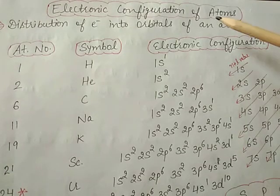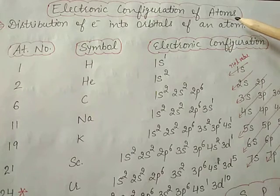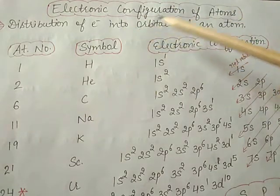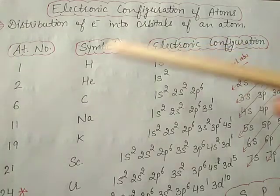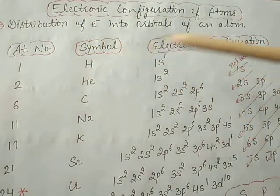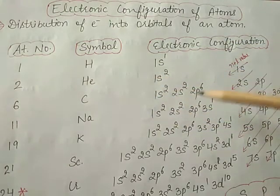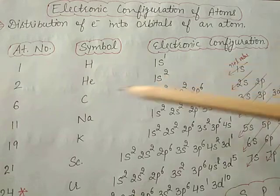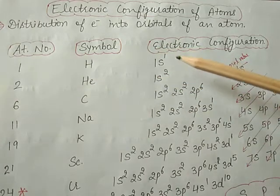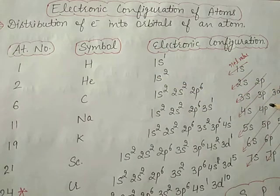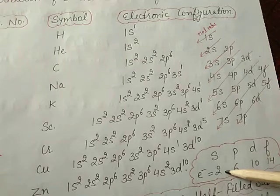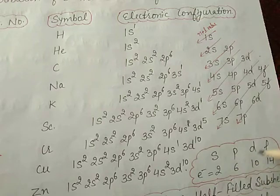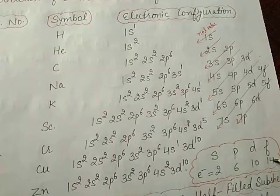The next topic is electronic configuration of atoms — the distribution of electrons into orbitals of an atom, showing how electrons are arranged in different orbitals. Using the arrow table: in s orbitals maximum 2 electrons, in p orbitals maximum 6 electrons, in d orbitals maximum 10 electrons, and in f orbitals maximum 14 electrons can be filled.